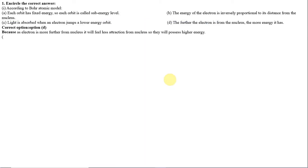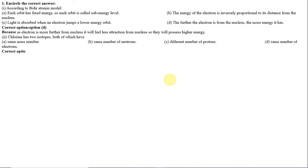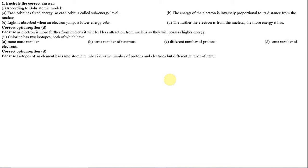Number 2: Chlorine has two isotopes, both of which have: A) same mass number, B) same number of neutrons, C) different number of protons, D) same number of electrons. Isotopes have different numbers of neutrons but the same number of protons and electrons. The correct option is D, because isotopes of an element have the same atomic number — same number of protons and electrons — but different number of neutrons and mass number.